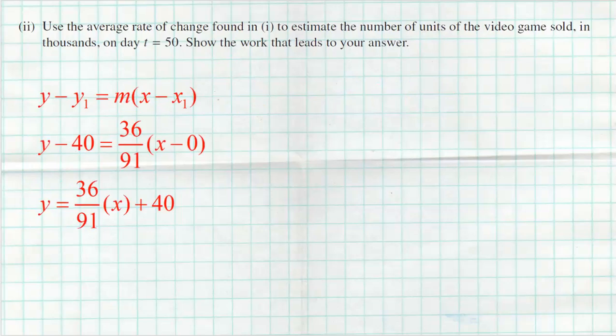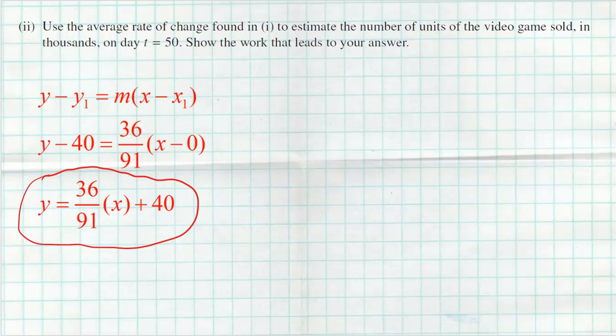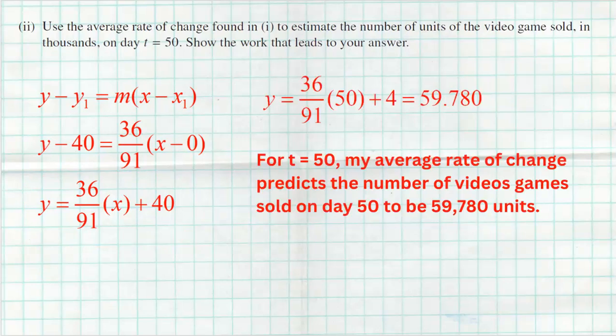Using the point (0, 40) since it's easier because of the zero, we get y minus 40 equals 36 over 91 times x minus 0. Adding the 40 over gives us y equals 36 over 91 times x plus 40. Now plugging in 50: 36 over 91 times 50 plus 40 gives 59.780 thousand units. So for T equals 50, our average rate of change predicts approximately 59,780 units of the video game sold on day 50.